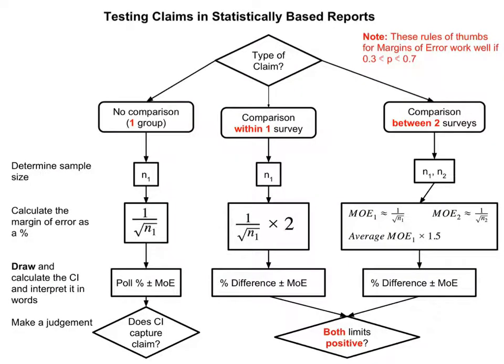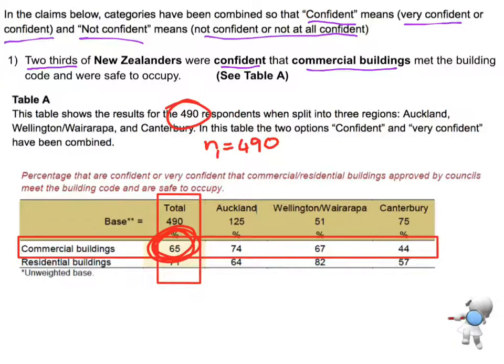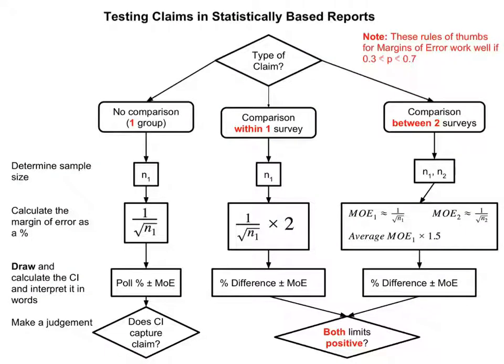So let's have a look at our diagram. We need to decide which category we're in. So we know we've only got a single sample size, so it must be one of the first two. And I'm only interested in the commercial buildings for all New Zealanders, so I'm only interested in that one value of 65%. So that means I'm dealing with this scenario, the no comparison.